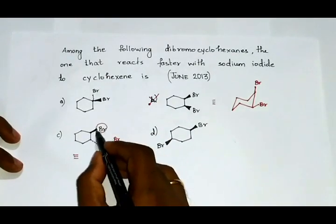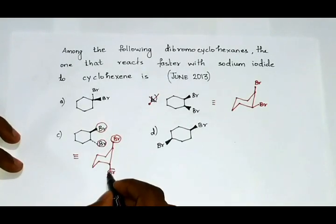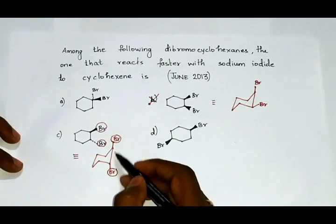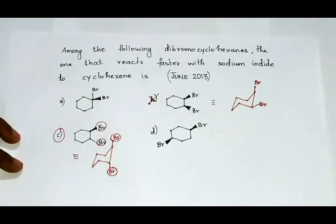This bromine group is above the plane of the paper, this bromine group is below the plane of the paper. Since they are anti-periplanar to each other, option C becomes the right choice.